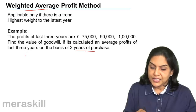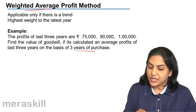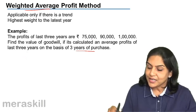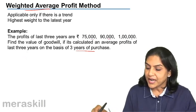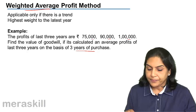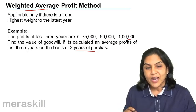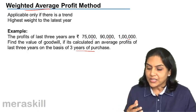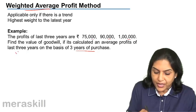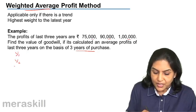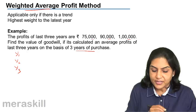So what do we take? 75,000, 90,000, and one lakh. There is an increasing trend: 75 in the first year, 90, then one lakh. Now what weights to be given? Either weights are given to us, or if we were to take, this is the oldest year and year three is the latest year.